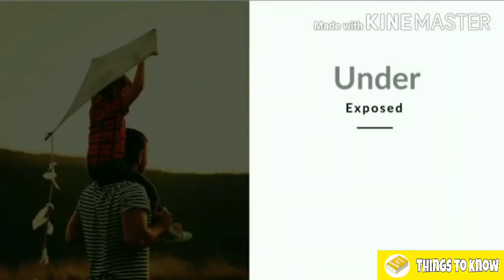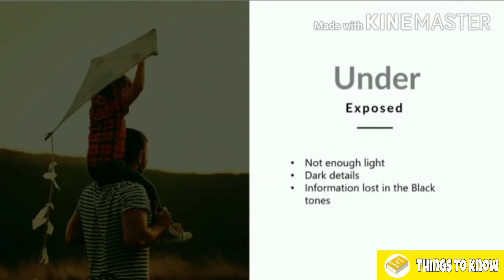The opposite is an underexposed photograph — when the camera has not got enough light for the correct exposure. We've got darker details, and information is being lost in the dark and black tones. In this particular photograph, the sky is just dull and very dark grey. We're losing details in the background. Everything just looks flat and too dark. This is an underexposed shot.